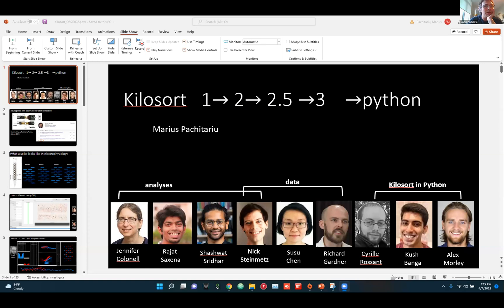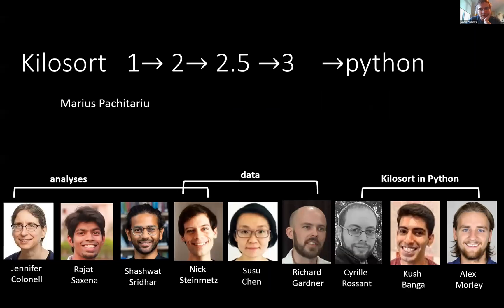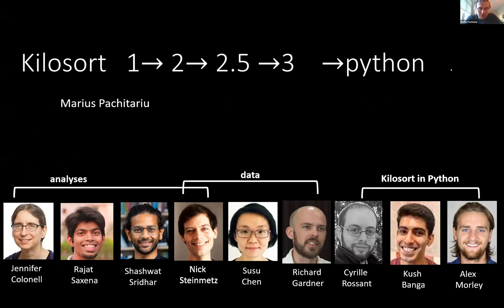Hello everyone. I will talk about Kilosort, which is what is known as a spike sorting algorithm. I'll tell you in a moment what that means. It's something that I have been building and supporting over the past five to seven years or so. There's been multiple versions of it. Now there's finally a Python version, but it's not quite complete. Part of the goal of this project is to really shift all of the community and the tools available to the Python version.